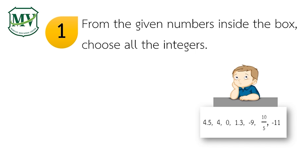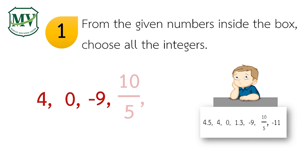Let's check your answer. The integers are 4, 0, negative 9, 10 fifths, and negative 11. 4 and 5 tenths and 1 and 3 tenths are not integers because they are decimals. Therefore, integers are whole numbers and their opposites.